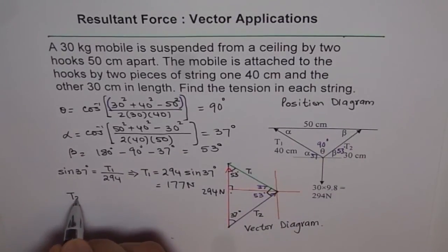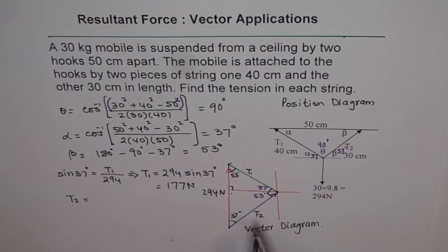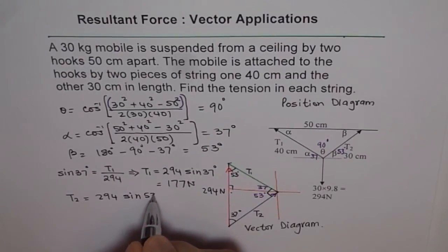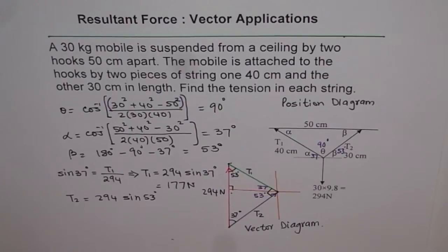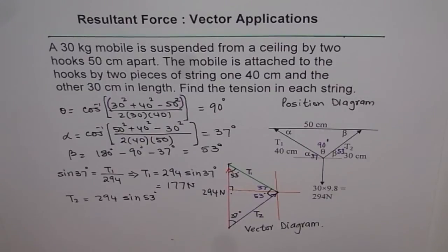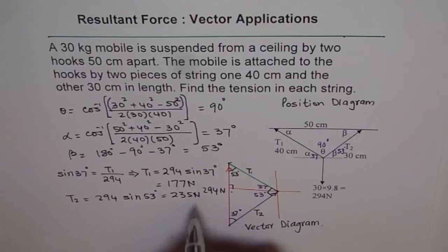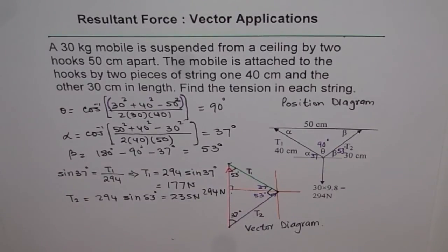Similarly we can find T2. T2 is opposite to angle 53, so T2 equals 294 times sine of 53. That gives us 234.79, so I will write 235 Newtons.